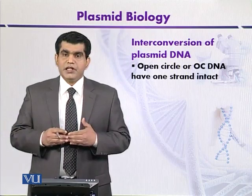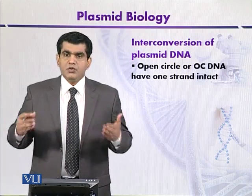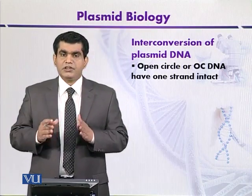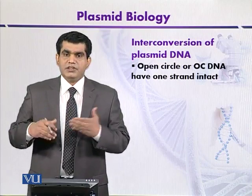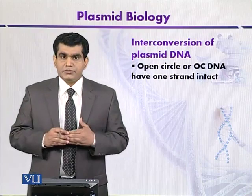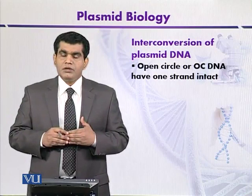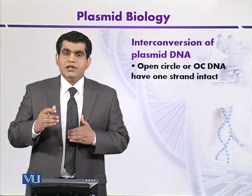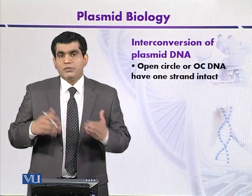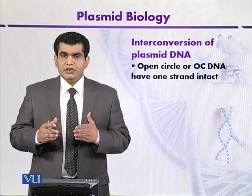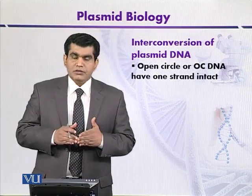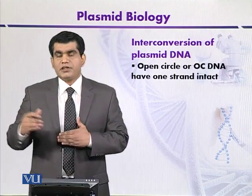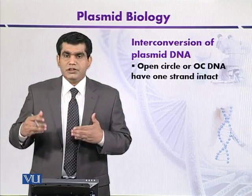Plasmid DNA that we isolate from bacteria is mostly present in a supercoiled configuration — that is, its double helix itself can have a superhelical structure. There are different types of enzymes that can interconvert supercoiled DNA into covalently closed circle DNA (CCC DNA) or open circle DNA (OC DNA).